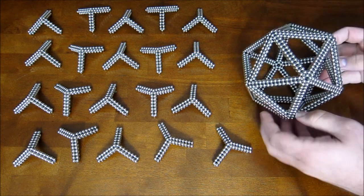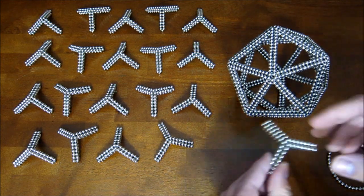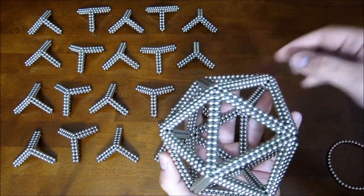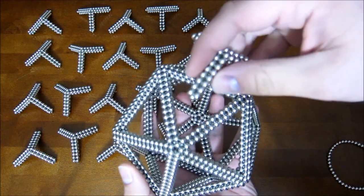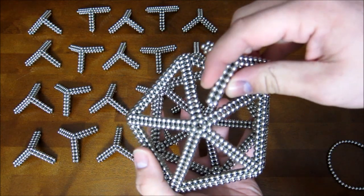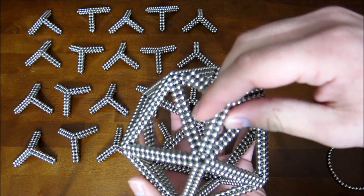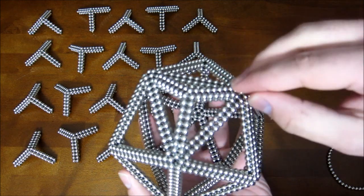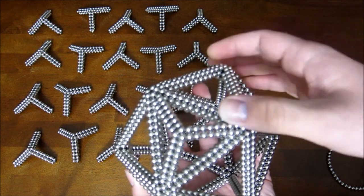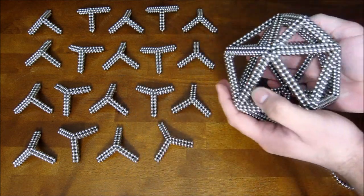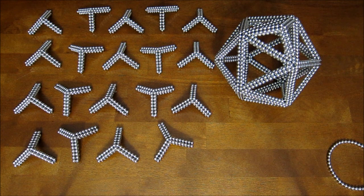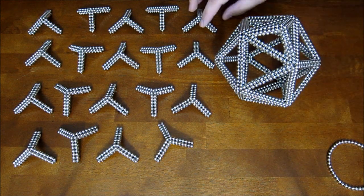And now really all that remains is to attach these to the icosahedron. The way that you do that is you take them, and these just fit nice and easy into the inside corners of the triangular faces, just like that. And so you want to go ahead and do that to all five of them around one corner.